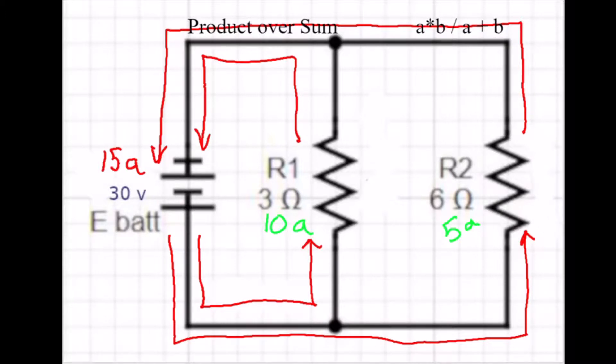So let's go ahead and clean things up a little bit. We've got enough information. We've got 30 volts at the battery, 15 amps, 10 amps, and 3 ohms at R1, 5 amps, and 6 ohms at R2.